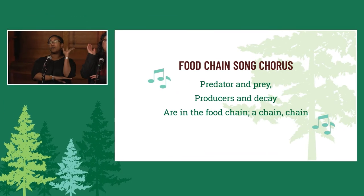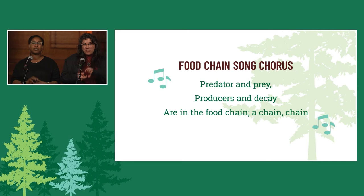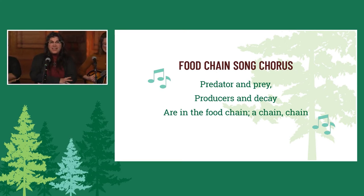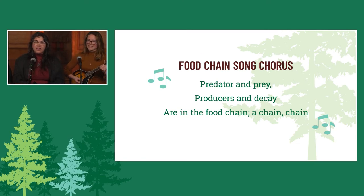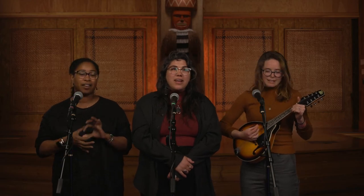Everybody now: predators and prey, producers, and decay are in the food chain — a chain, chain. Predators and prey, producers, and decay are in the food chain — a chain, chain. Coyote likes to eat a little rabbit meat in the food chain — a chain, chain. It really makes their day to eat some rabbit prey in the food chain — a chain, chain.